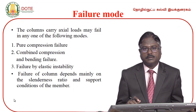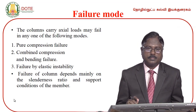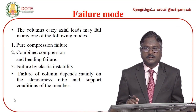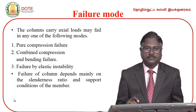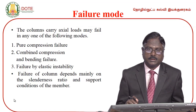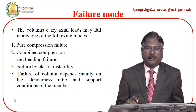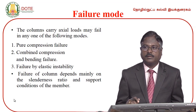Predominantly, columns carry compressive loads. The load may be axial, eccentric on one axis, or eccentric on both axes. The failure of a compression member or column will be in three modes: pure compression failure, combined compression and bending failure, and failure by elastic instability. The failure of a column depends on its effective length and lateral dimension — in other words, it depends mainly on the slenderness ratio.